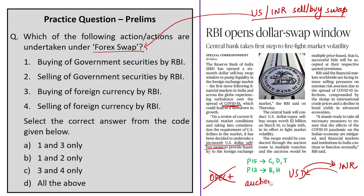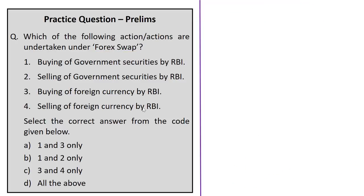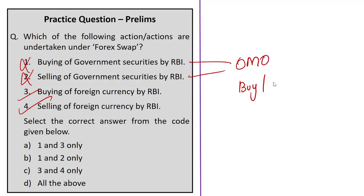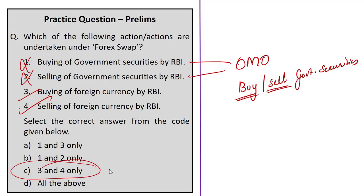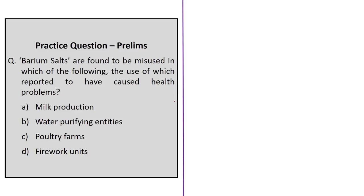In the forex swap question, four statements are given: buying of government securities by RBI, selling of government securities by RBI, buying of foreign currency by RBI, and selling of foreign currency by RBI. Statements 3 and 4 are related to forex swaps. Statements 1 and 2 are related to Open Market Operations, which is the buying or selling of government securities to control liquidity or money supply. The correct answer is option C — 3 and 4 only.